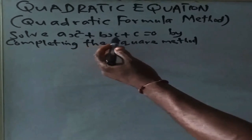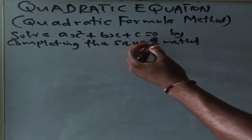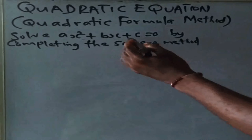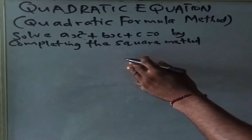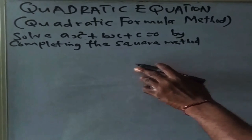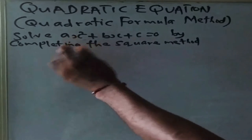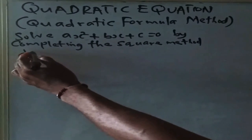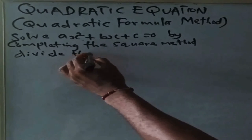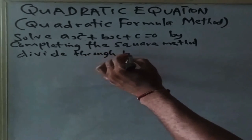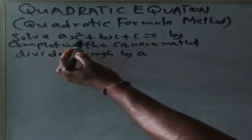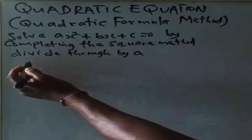Now, ax squared plus bx plus c equals zero. Solve this by completing the square method. This is the general form of the quadratic equation. By completing the square method — step 1: divide through by a, to make the coefficient of x squared equal to 1.